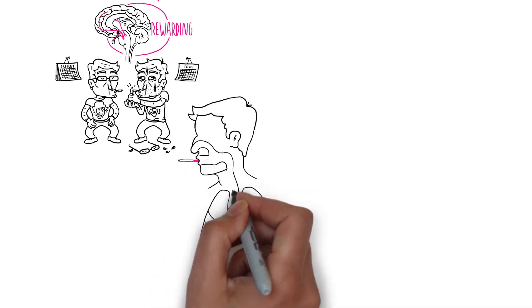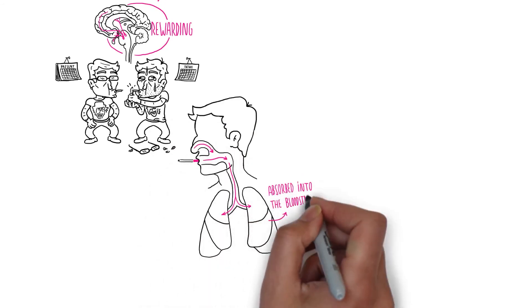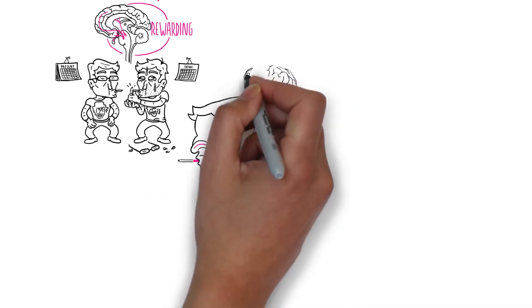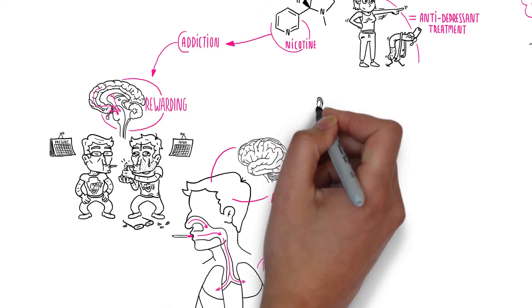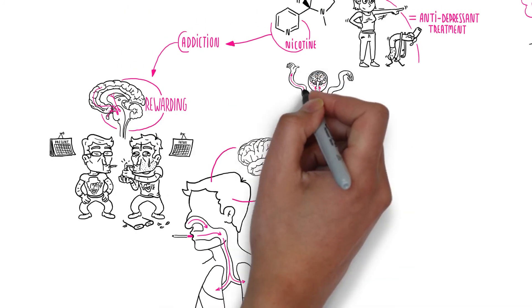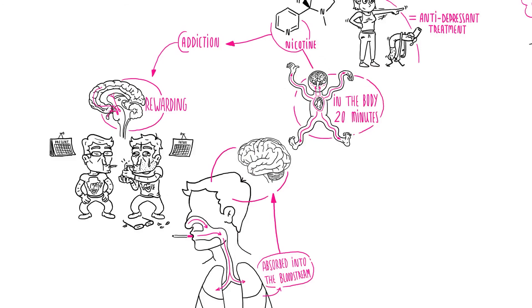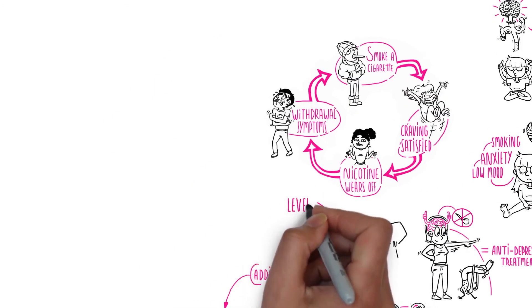Tobacco withdrawal sets in surprisingly soon after smoking a cigarette. While smoking, nicotine travels through the body to the brain, but nicotine only stays in the body for about 20 minutes. When smokers haven't had a cigarette for a while, nicotine levels drop.